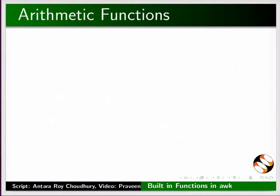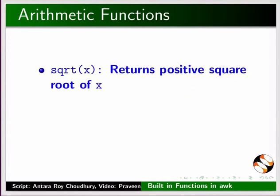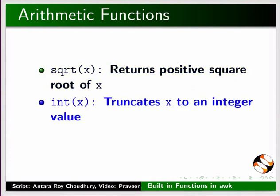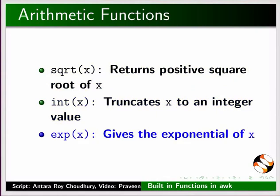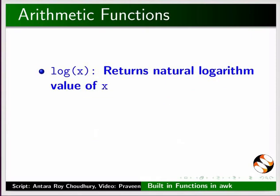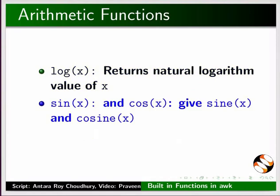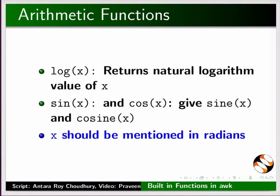Built-in functions are always available for ARC to call. First we will learn about the arithmetic functions. Square root function returns the positive square root of a number x. Int function truncates x to an integer value. Exponential function gives the exponential of x. Log function returns the natural logarithm value of x. Sin and cos give sin x and cos x respectively. Please note that the argument x should be mentioned in radians. Let us look at an example to understand these functions.